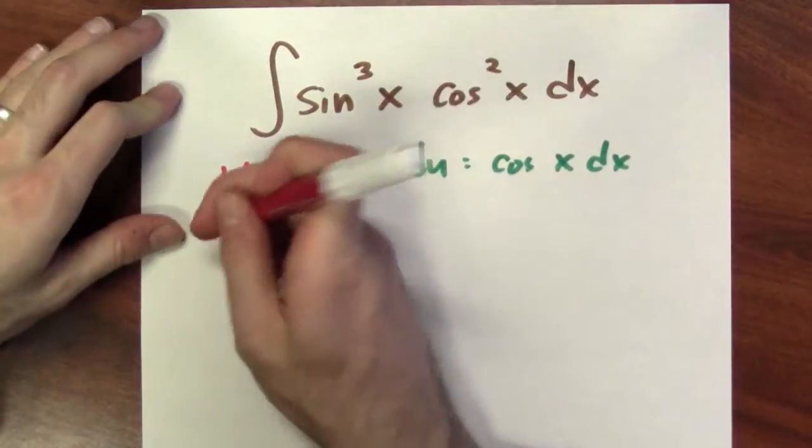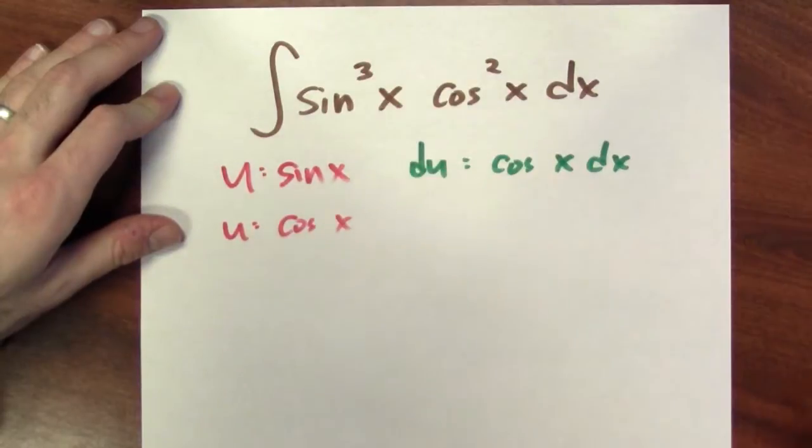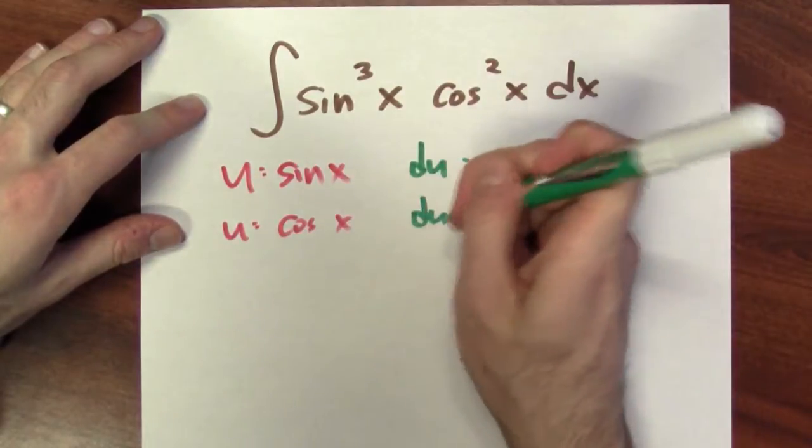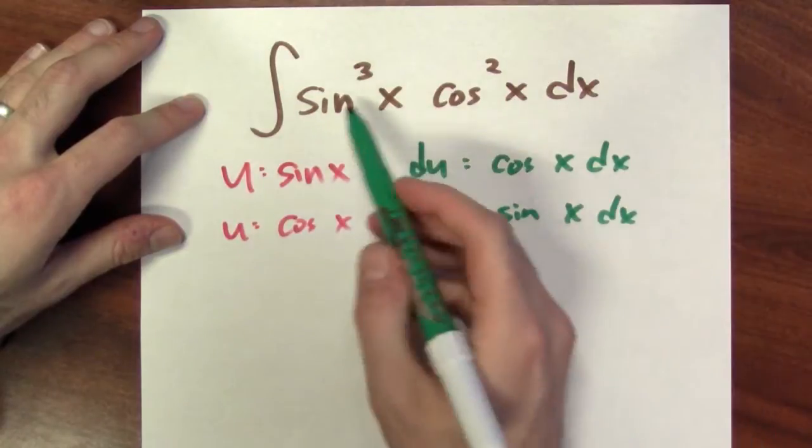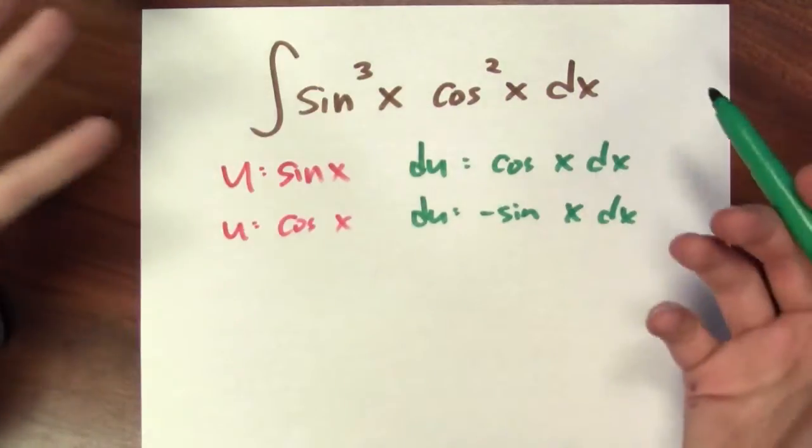If I made a different substitution, like u equals cosine x, well then du would be minus sine x dx, but then I've got a sine cubed term to deal with.